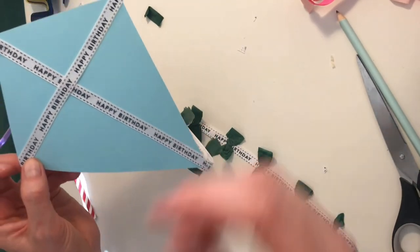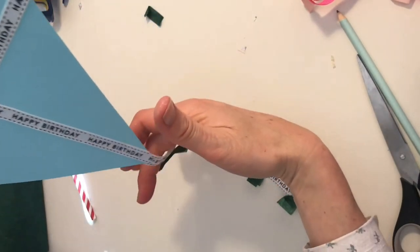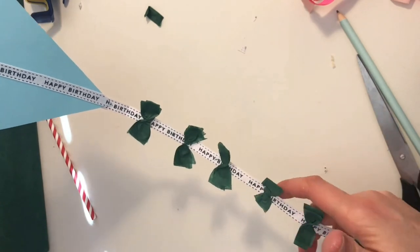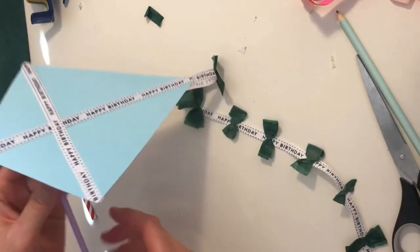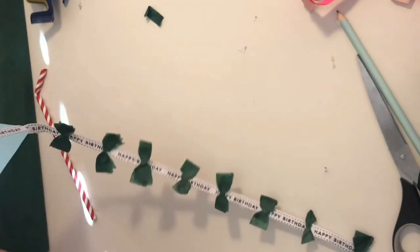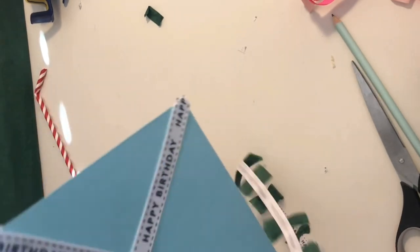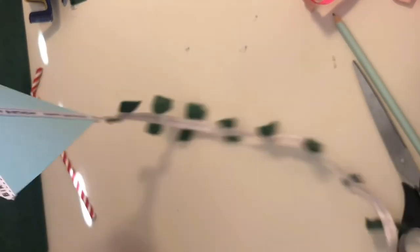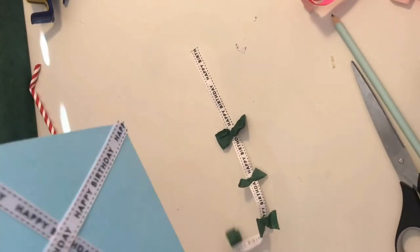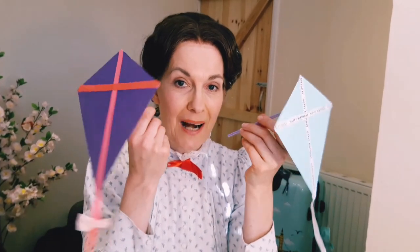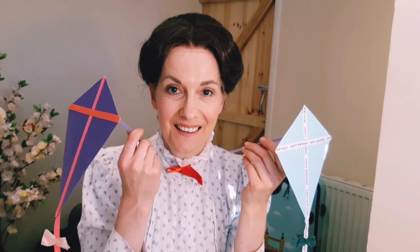And there we are, our practically perfect kite, all ready to fly. I hope you're going to join in with me when we sing Let's Go Fly a Kite with your beautiful, perfect kite. Perfect. Well done. Now that we've made our practically perfect kites together, I'm going to pop into a new video to show you how to do a practically perfect parasol. I'll see you there. Spit spot.